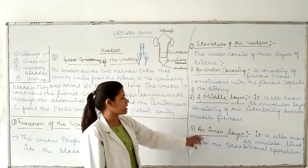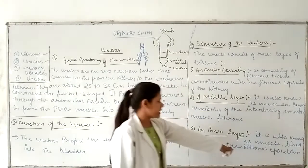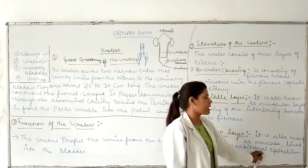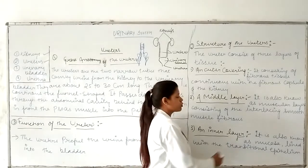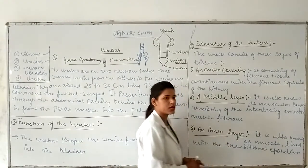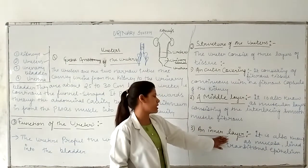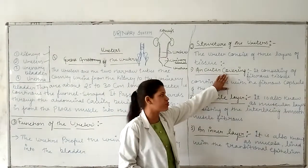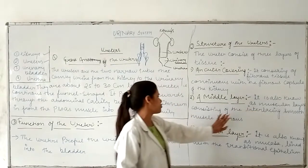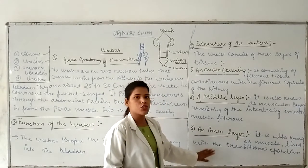The third layer is the inner layer, which we also call the mucosa. The lining is made of transitional epithelium. This epithelium tissue is transitional epithelium tissue. The outer layer is fibrous tissue, the middle layer is smooth muscle fibers, and the inner layer is transitional epithelium.